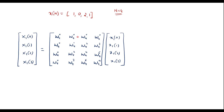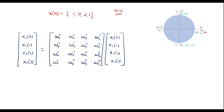The twiddle factor matrix has rows with exponents: first row (0,0,0,0), second row (0,1,2,3), third row (0,2,4,6), fourth row (0,3,6,9). To find twiddle factor values, draw a unit circle with the real axis (±1) and imaginary axis (±j). For N = 4, W4^0 = 1, then going clockwise: W4^1, W4^2, W4^3, W4^4, and so on, repeating periodically.